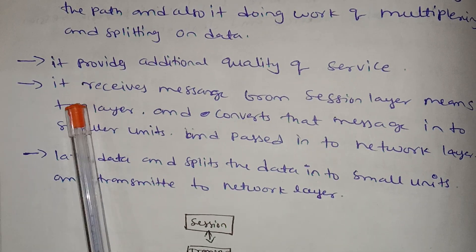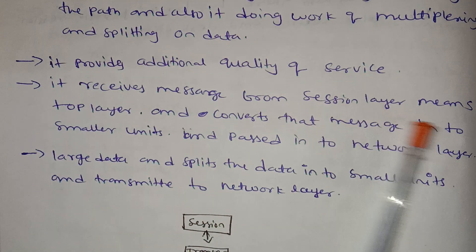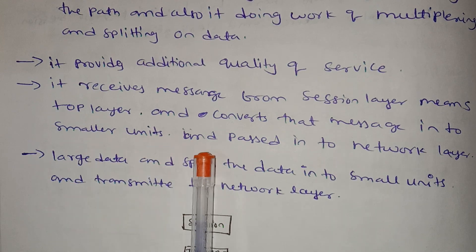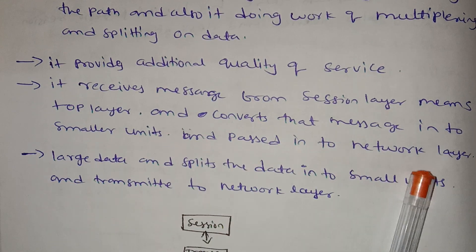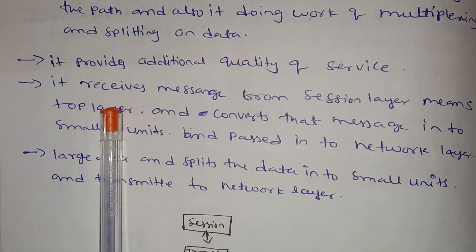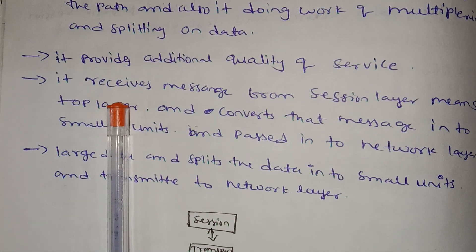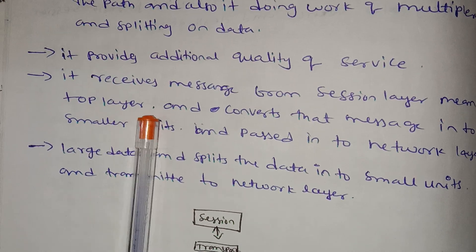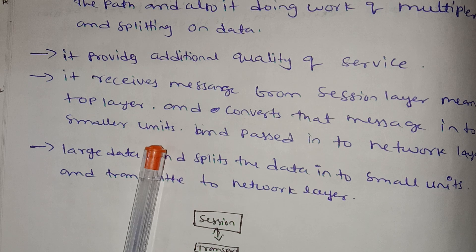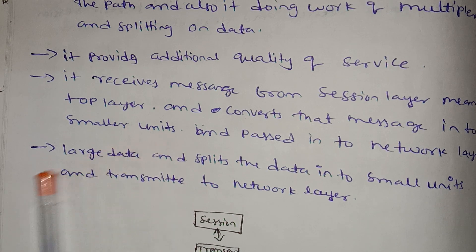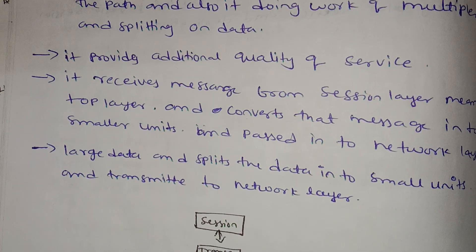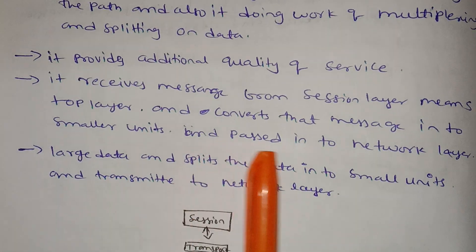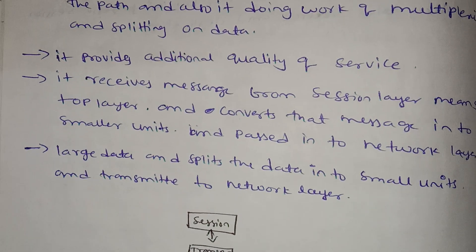The transport layer receives data from the session layer above it, converts that message into smaller units, fragments it into small parts, and passes it down to the network layer.